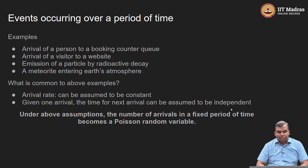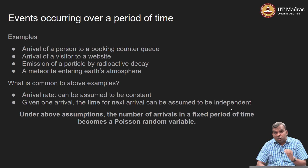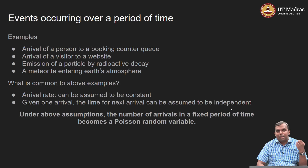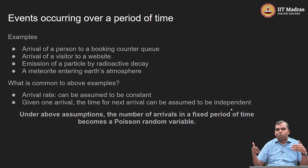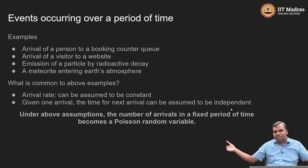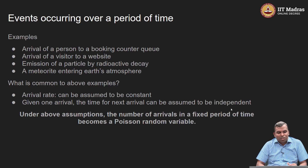Here comes the second assumption: supposing one arrival has happened, one event has occurred, the time you have to wait for the next event can be assumed to be independent of what has happened in the past. In some sense, the occurrence of a new event is not dependent on the past of what you observe. That is quite reasonable in many cases — for instance, if you are running a website, the time for the next person to come in does not depend on how many have already come. So the scenario is similar even after many people have visited.